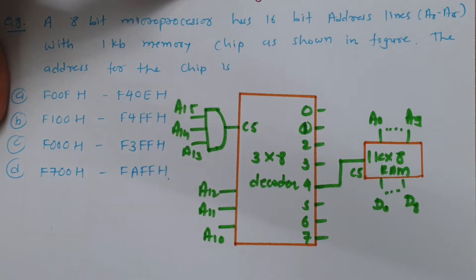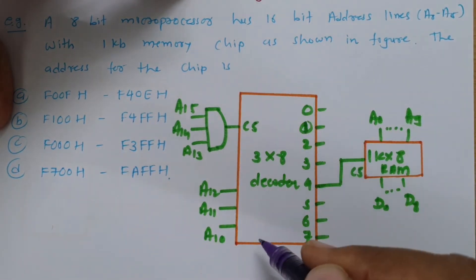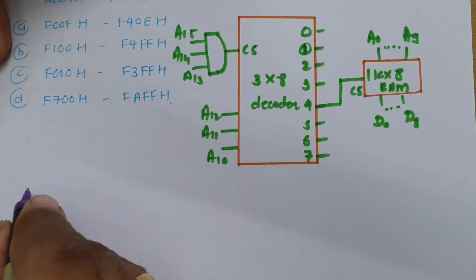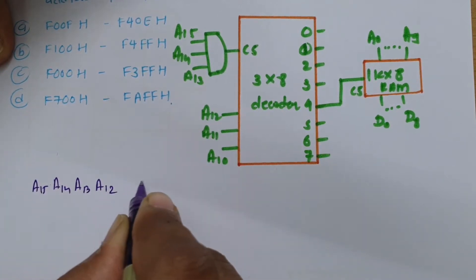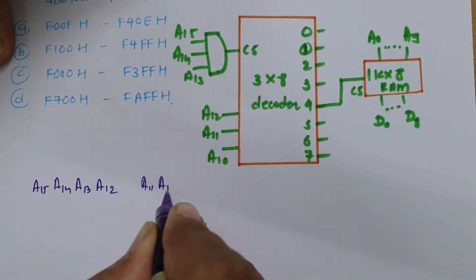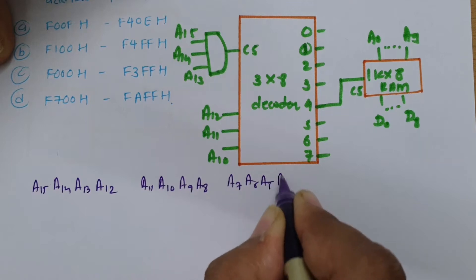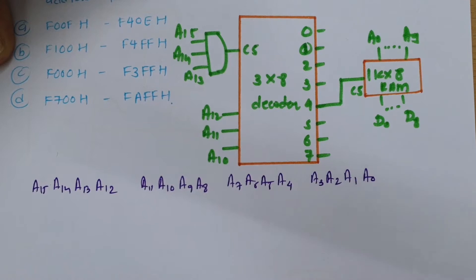First we will write the starting address and then determine the ending address. Let us write out all the address lines: A15, A14, A13, A12, A11, A10, A9, A8, A7, A6, A5, A4, A3, A2, A1, and A0.